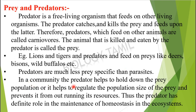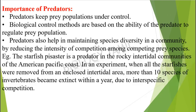In a community, the predator helps to hold down the prey population, regulating its population size and preventing it from outrunning its resources. The predator has a definite role in the maintenance of homeostasis in the ecosystem, keeping prey population under control. Biological control methods are based on the ability of the predator to regulate prey population.